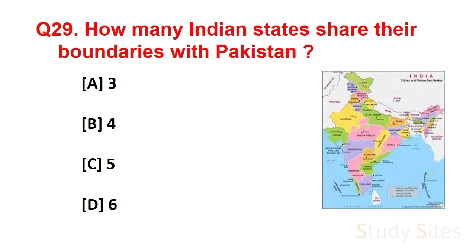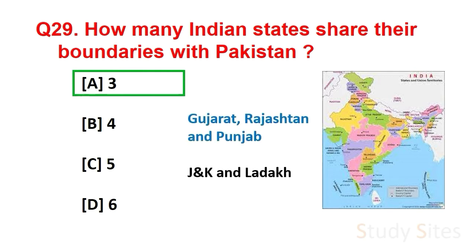Question number 29. How many Indian states share their boundaries with Pakistan? There are 3 states and 2 union territories that share their boundaries with Pakistan. They are Gujarat, Rajasthan, Punjab, and the union territories are Jammu and Kashmir and Ladakh.